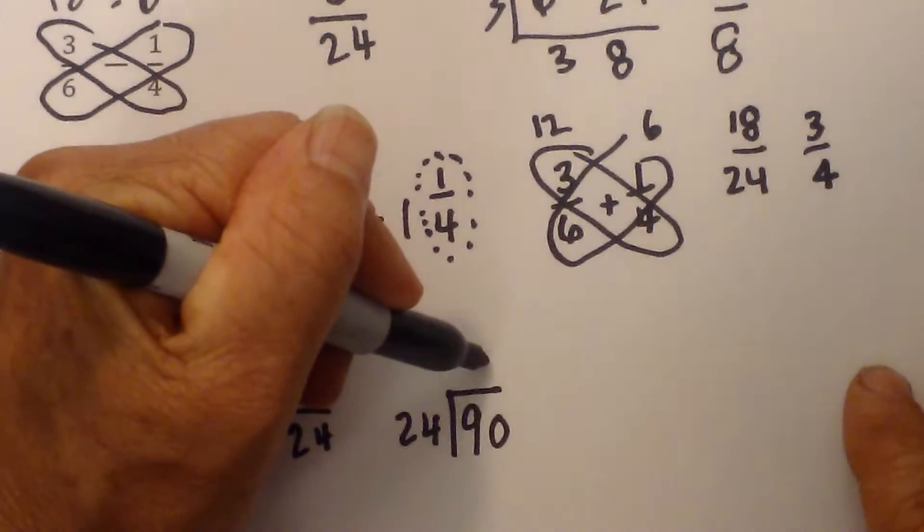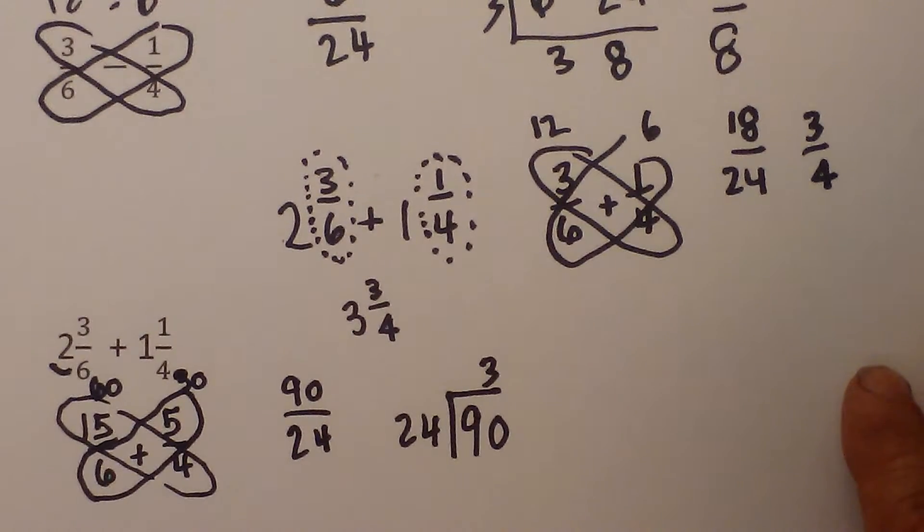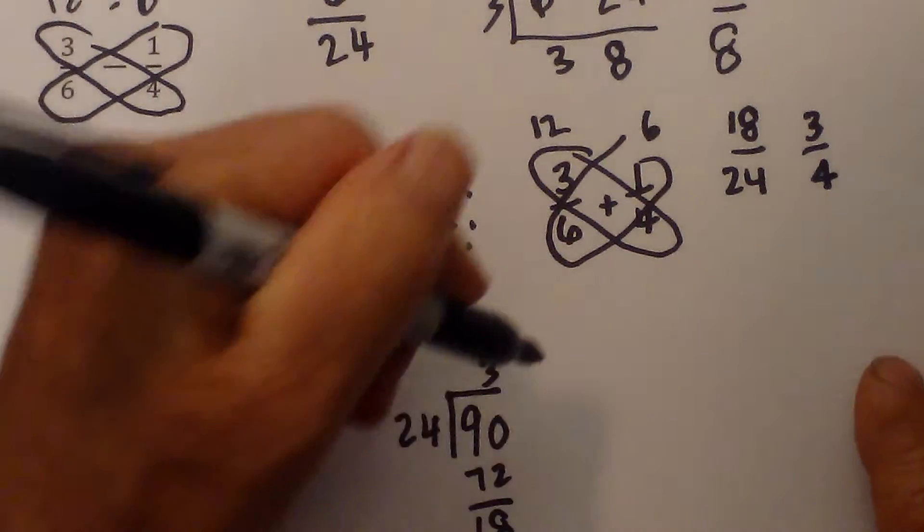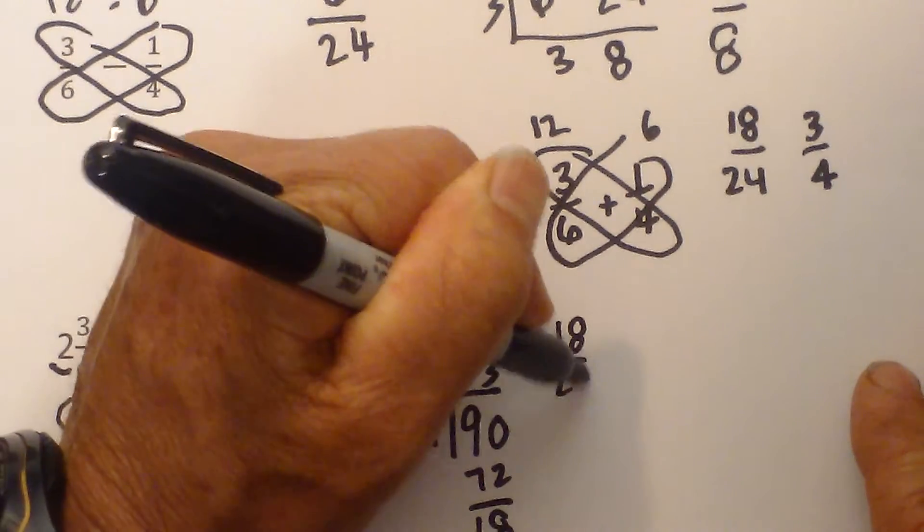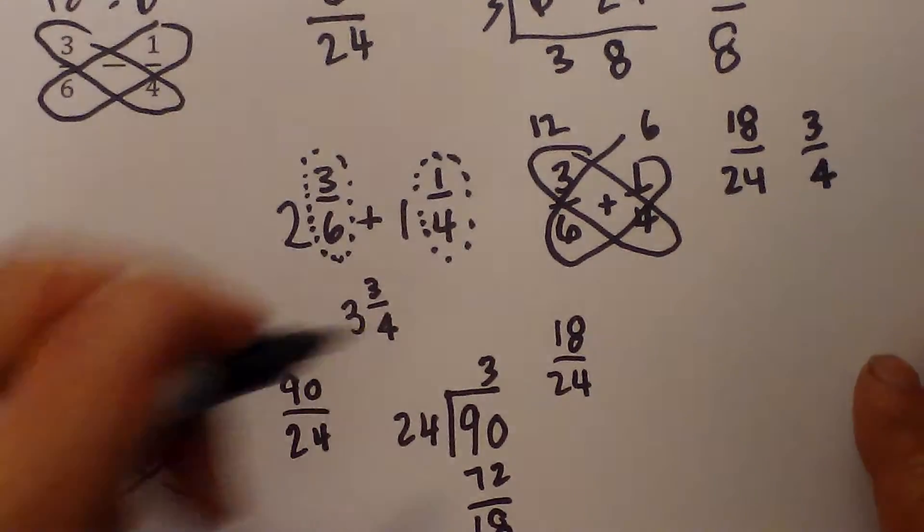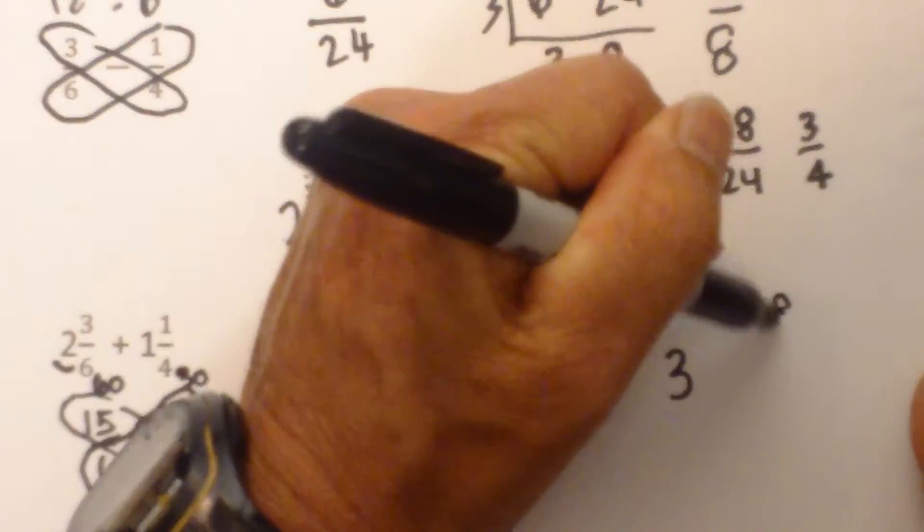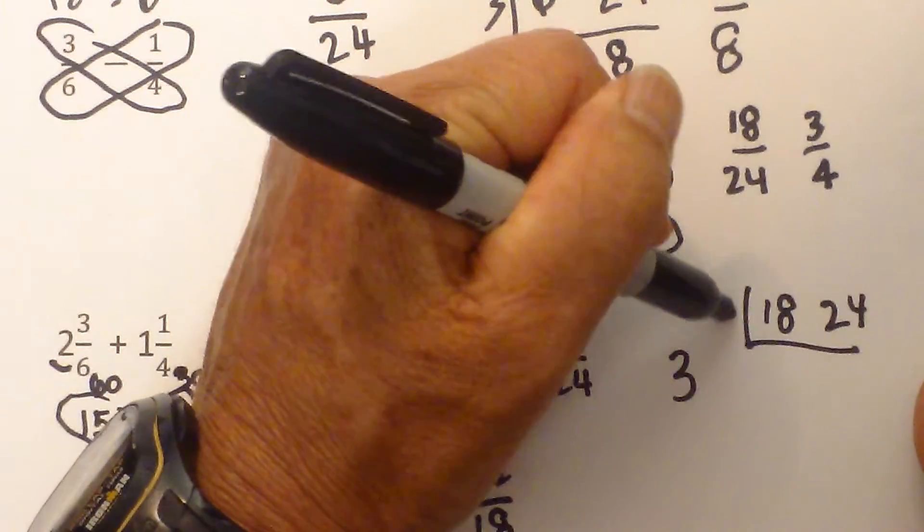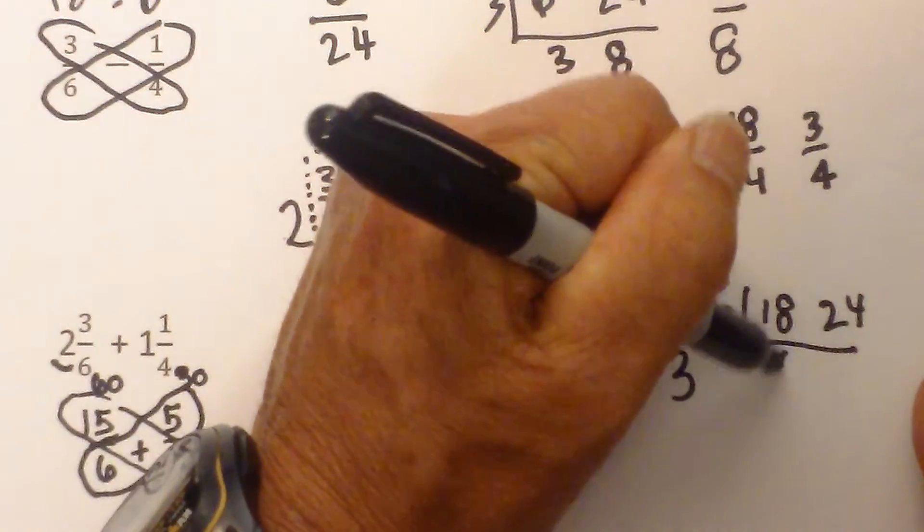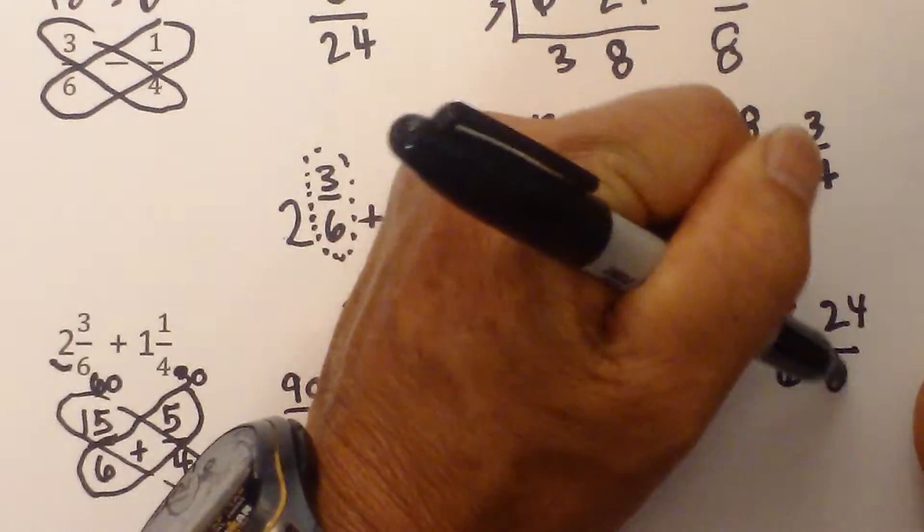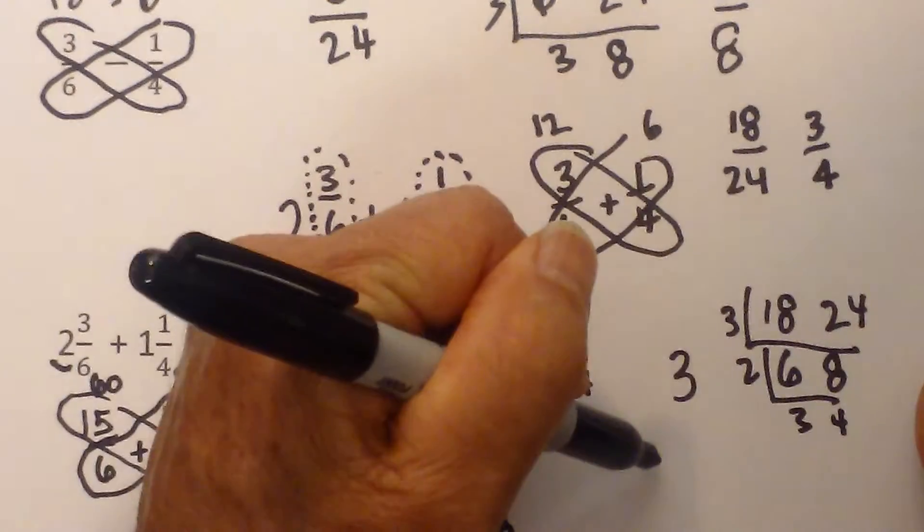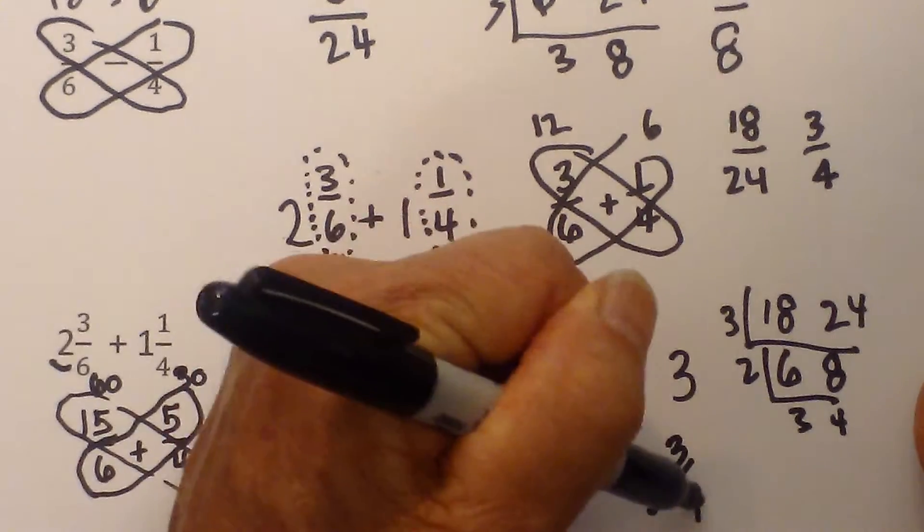3 times 24 is, I am going to cheat here and use my calculator, it is 72. 90 minus 72 is 18. So then I have 18 over 24. And then I can simplify that. So I have 3 and I am going to use this method again. I like to use this method. Both of these can be divided by 3. 3 goes into 18 six times and into 24 eight times. Then I can use 2. 2 goes into 6 three times and into 8 four times. So again you get the same answer, 3 and 3 fourths.